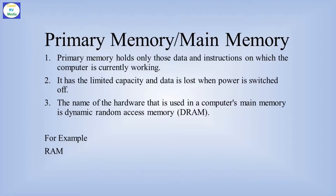Once the program is completed, the RAM is cleared. The capacity of primary memory is limited. When the power is off, the data is erased. The hardware of main memory is DRAM — dynamic random access memory. Primary memory is RAM, which stands for random access memory.